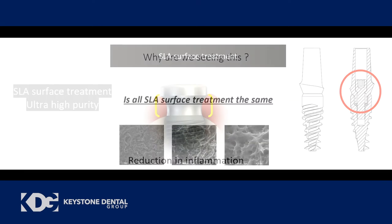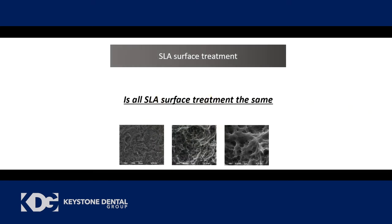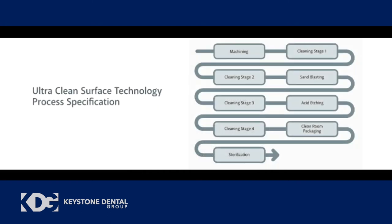Let's look at each of the three areas. First: SLA surface treatment. We're all familiar with SLA — originally from Straumann, sand-blasting with large grit and acid etching. Most implant companies offering an altered surface today use some form of SLA treatment. But is all SLA the same? We all use the same basic recipe: machine the implant from a titanium rod, degrease and remove the oil coolant used in machining, create macro-roughness by sandblasting with aluminum oxide particles, passivate with nitric acid, then create micro-pitting with phosphoric acid etching. That's the basic recipe.